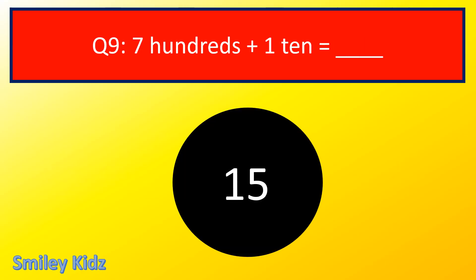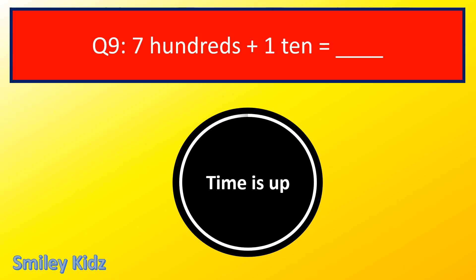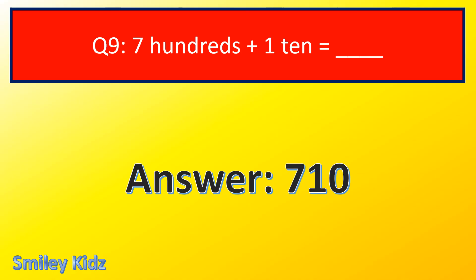Question number 9. 700 plus 110 is equal to? The right answer is 710. So 700 plus 110 is equal to 710.